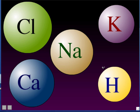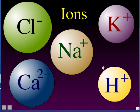When an atom or molecule becomes an ion, we indicate that by putting a little plus or minus in the upper right-hand corner as a superscript. If it's an ion, it's always got a little plus or minus in the upper right-hand corner. If you see an atom or molecule with a plus or minus in the upper right-hand corner, it's an ion — it has become electrically charged.